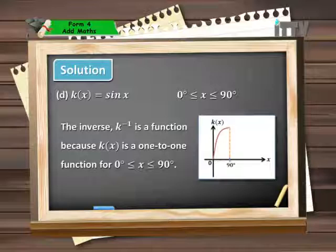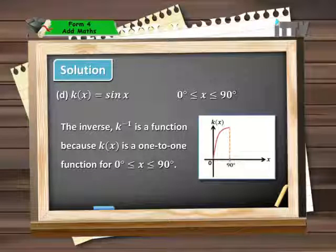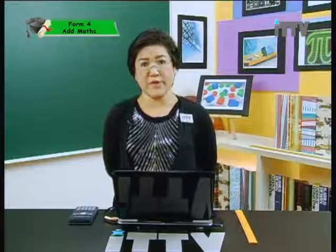Part D tells us something extra. If we restrict the domain for the same function sin x, but only consider x values from 0 to 90 degrees, every value of x is mapped onto only one value of y. Within this domain, the original function is a one-to-one relation, so the inverse is also a one-to-one relation. Hence the inverse k⁻¹ is a function because k(x) is a one-to-one function only within the domain of 0 to 90 degrees. Changing the domain of a function can make its inverse a proper function.